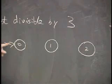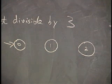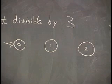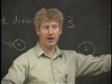And I start in the remainder 0 state because when I haven't seen any symbols at all, the empty string has a remainder of 0.